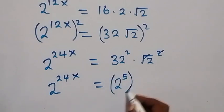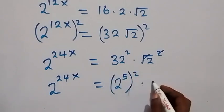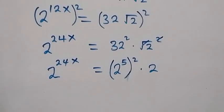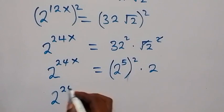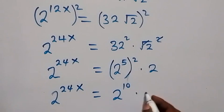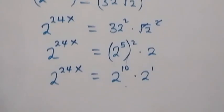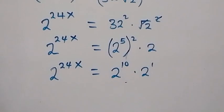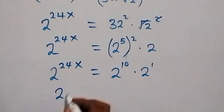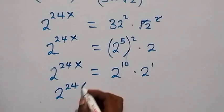Then raised to power 3, times 2 raised to power 1. This power also multiplies, giving us 2 raised to power 24x equals 2 raised to power 10 times 2 raised to power 1. Since the bases are the same we can apply the law of indices and add the powers, giving 2 raised to power 24x.